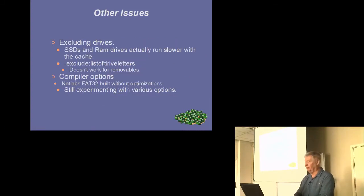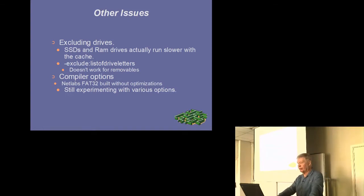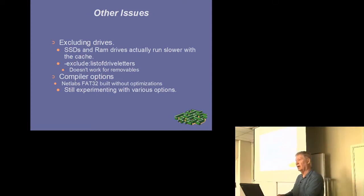Regarding other issues: SSDs — some SSDs, not all — and all RAM drives run slower with the new cache, which makes sense because it's just another level of RAM to go through to get to the disk. What's been added is an exclude parameter on the IFS line itself, where you can put a list of drive letters, and the cache will ignore those particular drives even if they are FAT32. Also, the compiler options at Netlabs had no optimization and targeted 286 — we've done some optimization, and throughput is somewhat faster even without the cache.